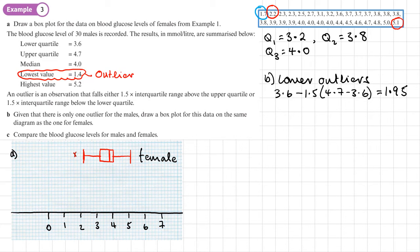It says there's only one, so I don't need to do any further calculations. But just to check, I'm now going to work out if there are any upper outliers. I'm not expecting there to be any. That will be 4.7 plus 1.5 times the interquartile range. That's 6.35. As I expected, there shouldn't be any outliers because the largest value is 5.2.